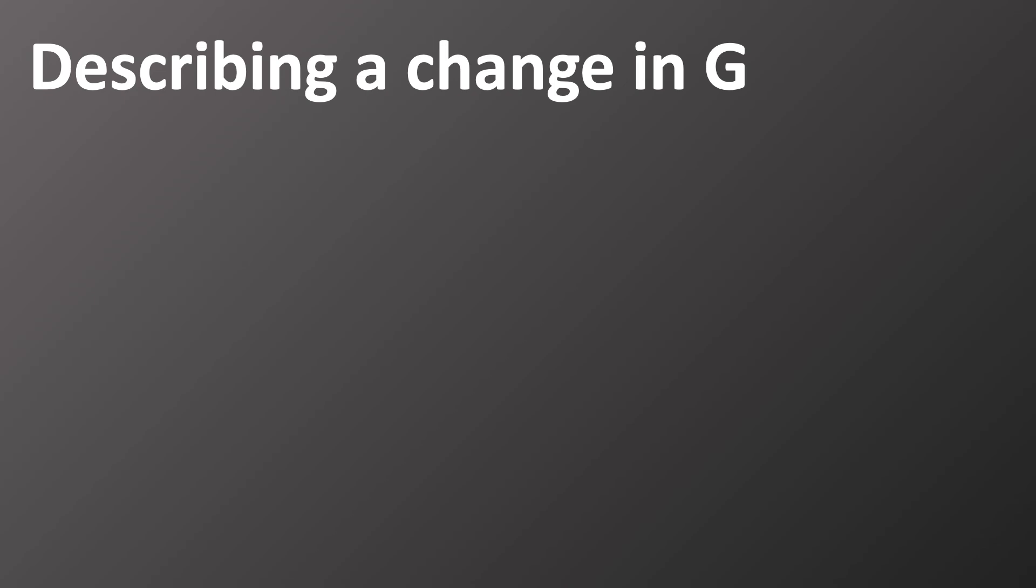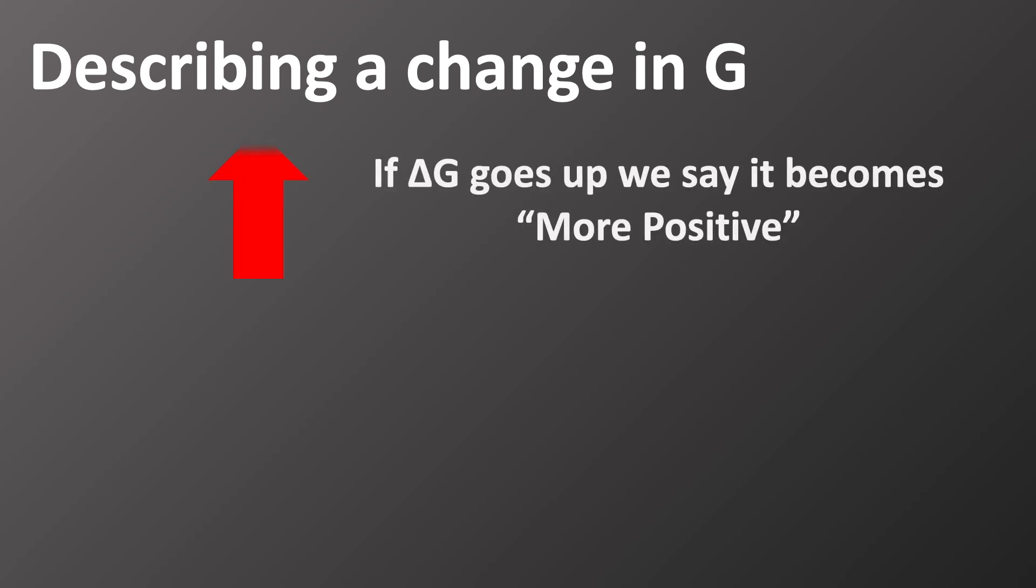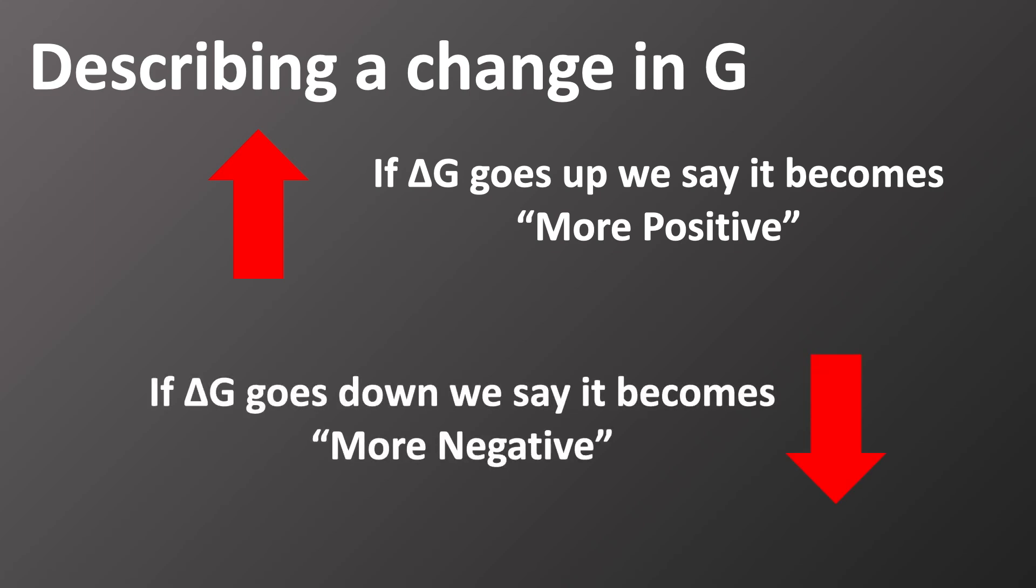It's often the case in exam questions where we have to describe the change in delta G after we change the reaction conditions. In this case, it's important to be clear with what we mean. If delta G goes up, we must say that it becomes more positive. And if delta G goes down, we must say it's becoming more negative.